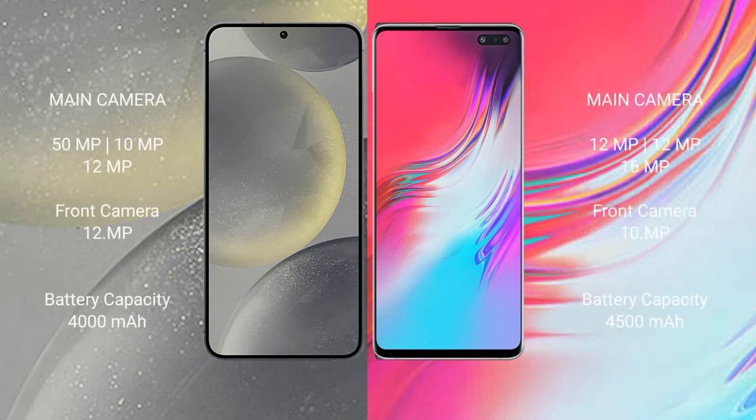Samsung Galaxy S24 features a triple rear camera setup: 50MP plus 10MP plus 12MP, with a 29MP front camera. Samsung Galaxy S10 features a triple rear camera setup: 12MP plus 12MP plus 16MP, with a 10MP front camera.